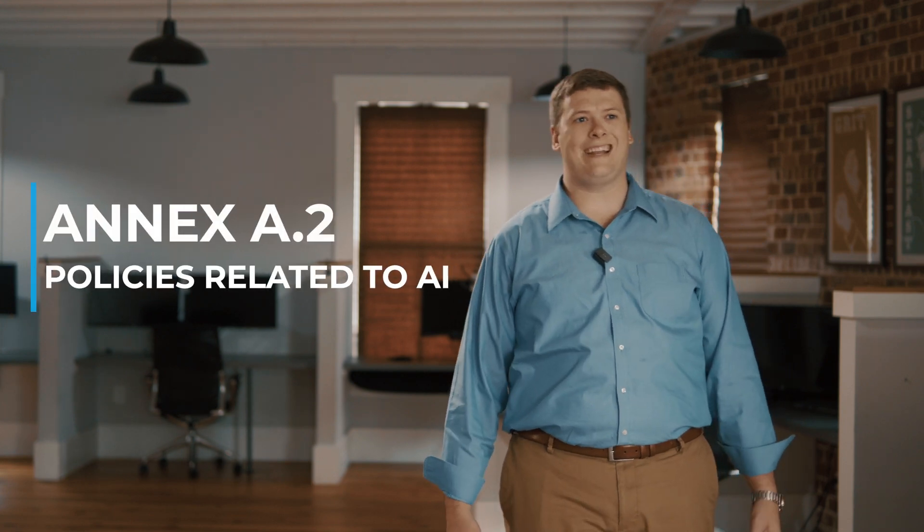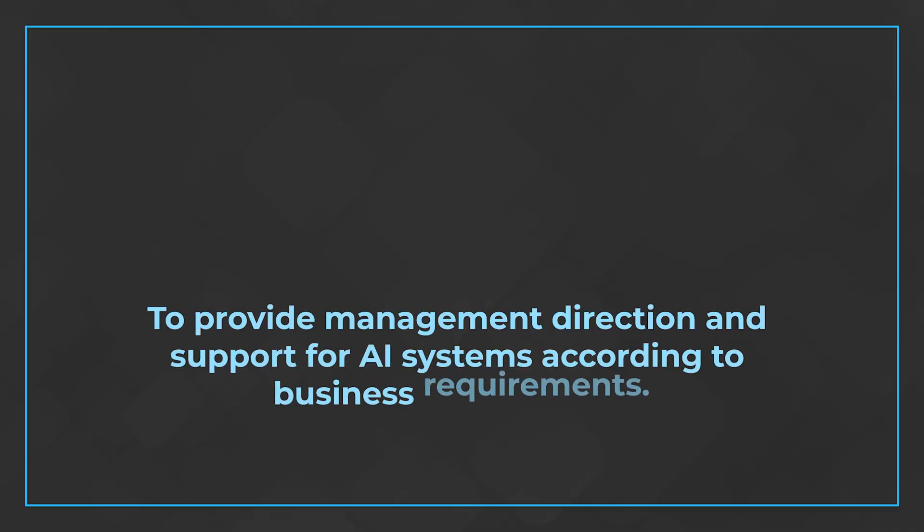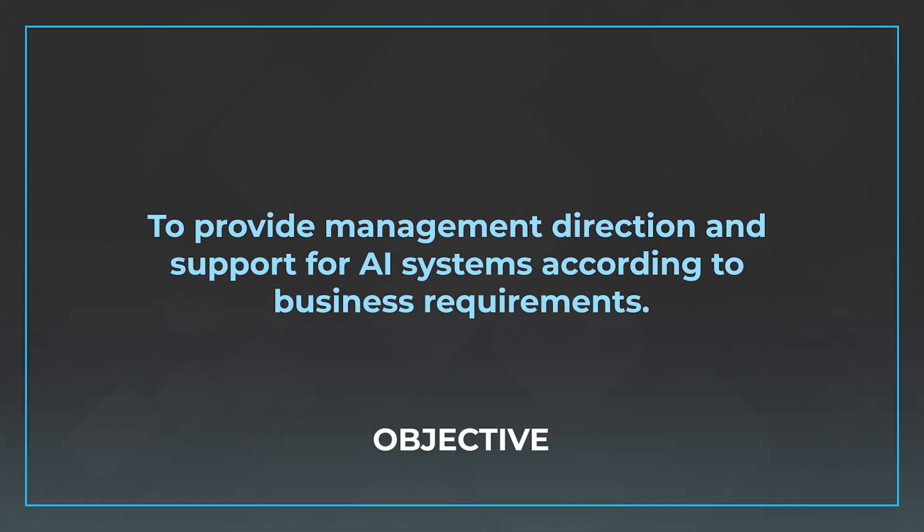Now we'll get into the Annex A controls. We'll start with Annex A.2, policies related to AI. There are three controls here and the objective of these controls is to provide management direction and support for AI systems according to business requirements. The implication is that you need to define your business requirements for the use of AI. The three specific controls are as follows.